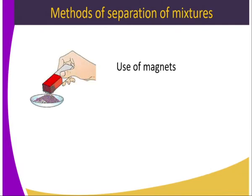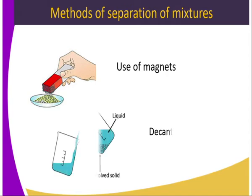Remember, the properties of the constituent substances determines the method of separation. So if a substance within the mixture is magnetic or ferromagnetic, we can use a magnet, since it can be attracted by magnet. We also have decantation, which is basically used to separate a solid-liquid mixture which is insoluble.